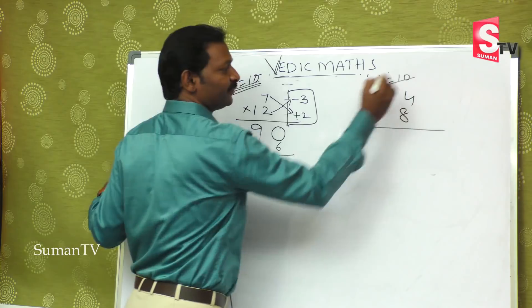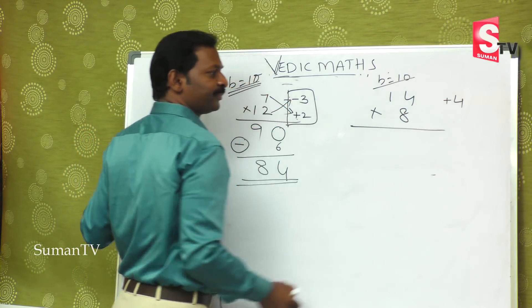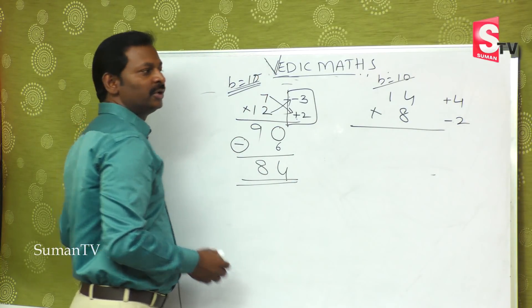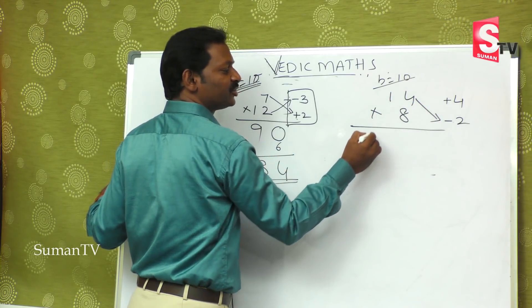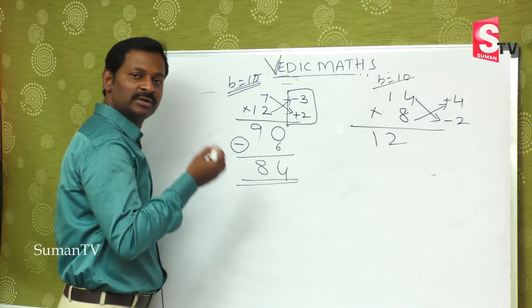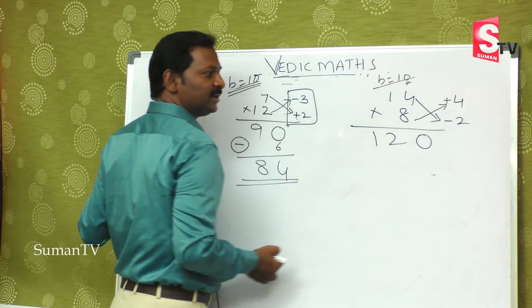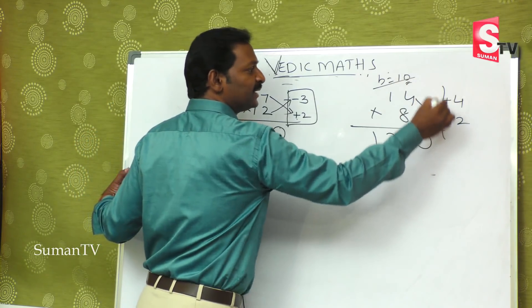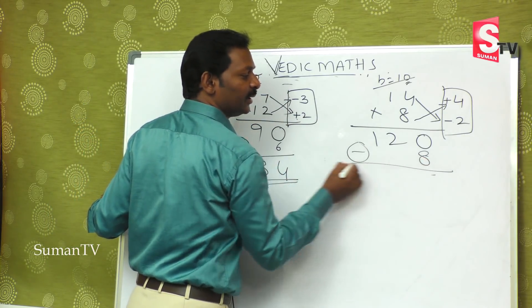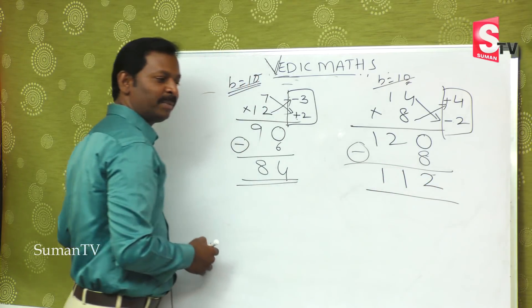What is the base number now? 10. Is 14 greater than 10 or less than 10? Greater — by 4. And 8 is less than 10 by 2, so minus 2. Now 14 minus 2 is 12, or 8 plus 4 is also 12. Since the base is 10 we put a 0. Then plus into minus is minus — 4 times 8 gives 32. According to the base complement method, the answer is 112.